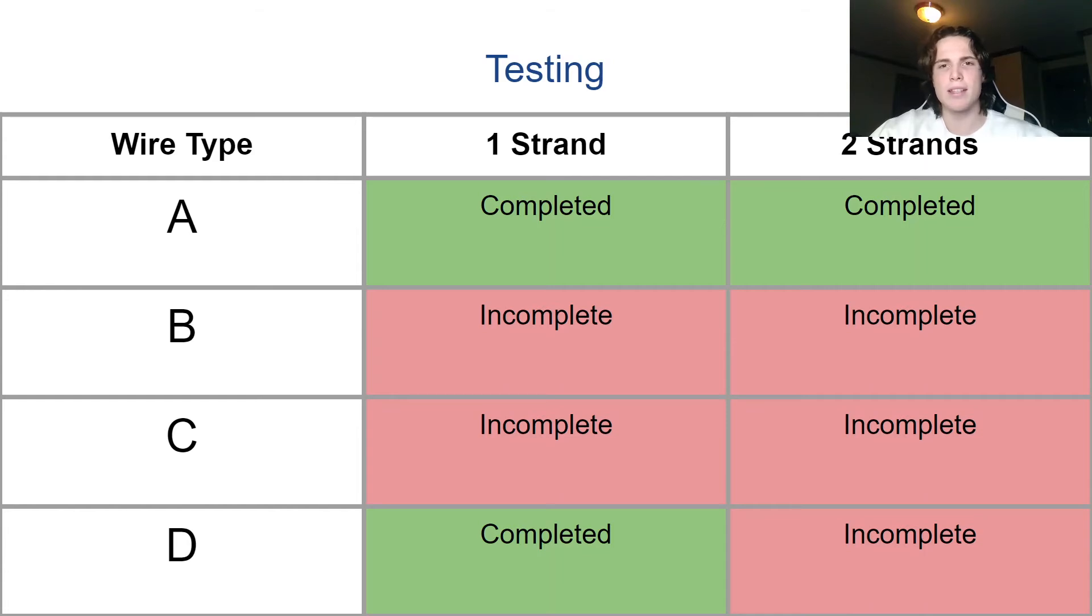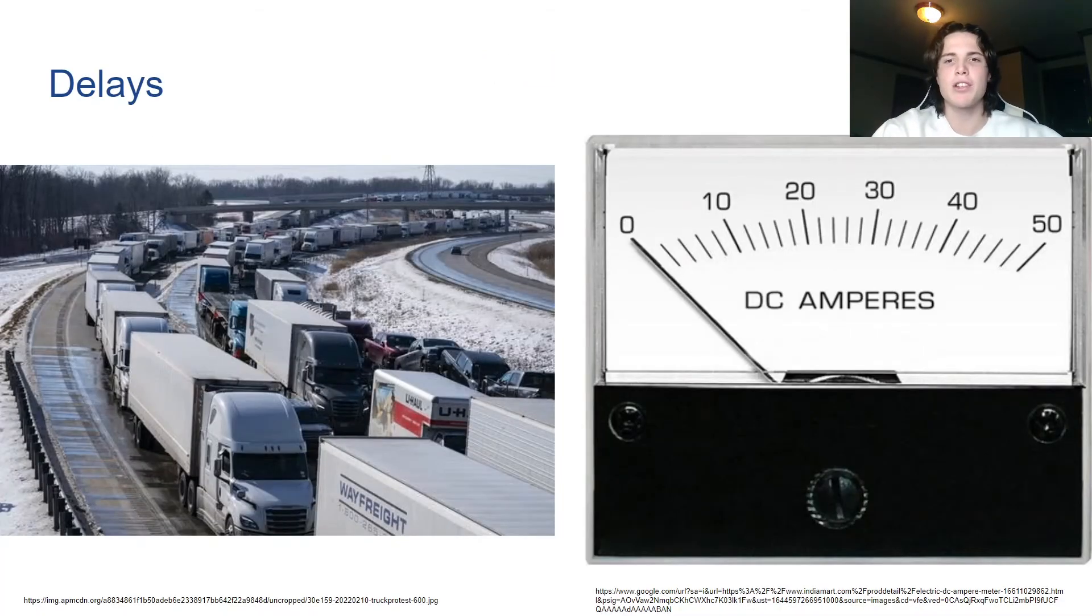Both type A tests are complete and the one strand test for type D is completed. Transportation and power supply amperage are currently causing delays in testing. The type B wire was lost during transportation and is being reshipped. The power supplies available from my research only output 6 amps, which is not enough for two strand testing of types C and D. A second power supply is being located to help adapt the testing for these two wire types.